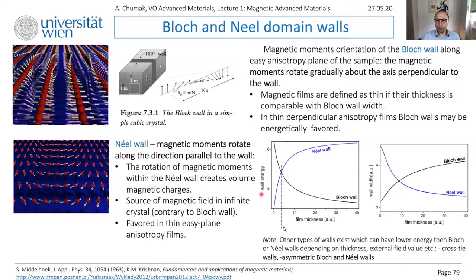Wall energy should be as minimal as possible, and wall width is the size of the wall as a function of film thickness. For the Bloch wall, the thicker the sample, the less important the shape anisotropy, and the smaller the energy. So the Bloch wall would have small energy for thick samples. For the Néel wall, vice versa — the minimum of energy occurs for very thin samples. So the thinner the sample, the better for the Néel wall.